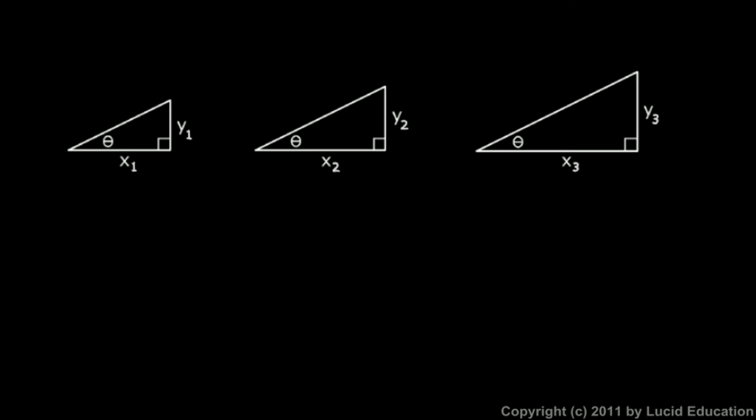Now if we were to change the angle, if I were to make a triangle that had angle theta really small something like this, and then this y over this x, that would be a different ratio than any of these up here.